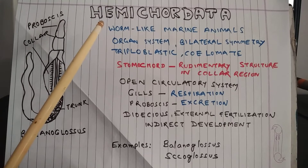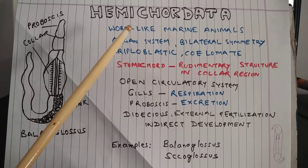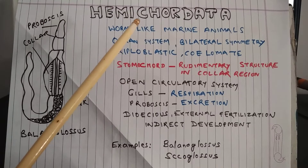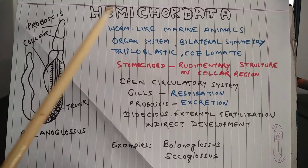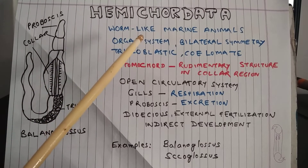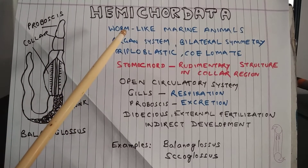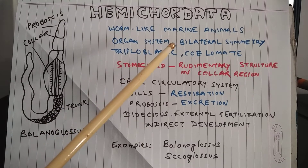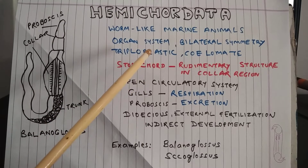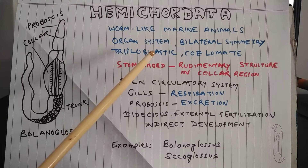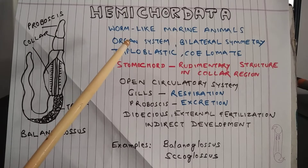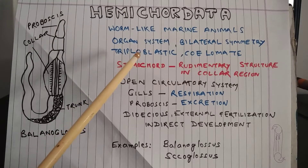Hemichordates are worm-like marine animals — worm-like means they somewhat appear like earthworms or roundworms. They have organ system level organization. The animal body shows bilateral symmetry, which means the body can be divided into two equal halves. They are triploblastic animals, so the body wall is composed of three layers.